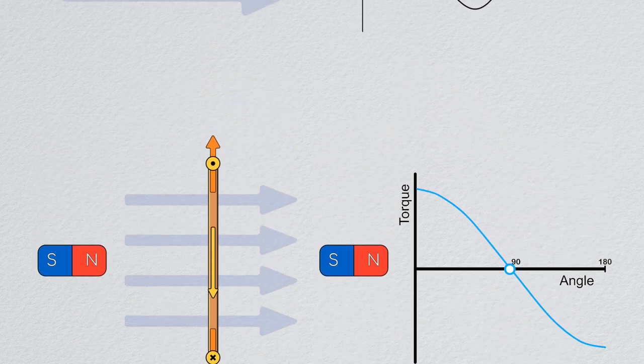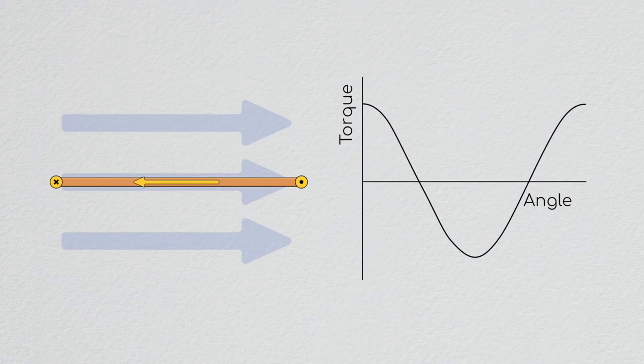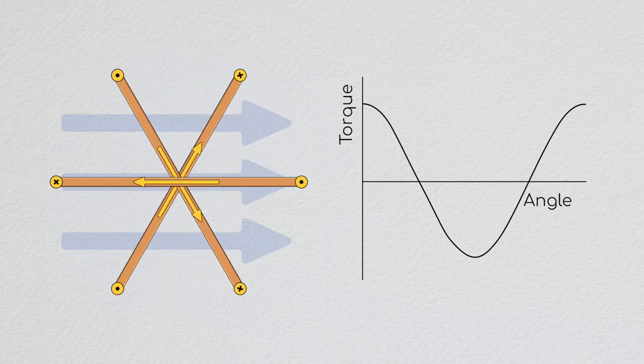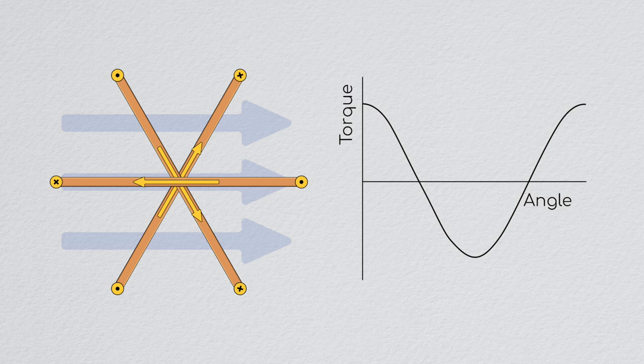To fix this second issue, a motor uses multiple loops of wire, typically three, each offset from the last by 120 degrees, and it switches the current path through these loops in a process called commutation.